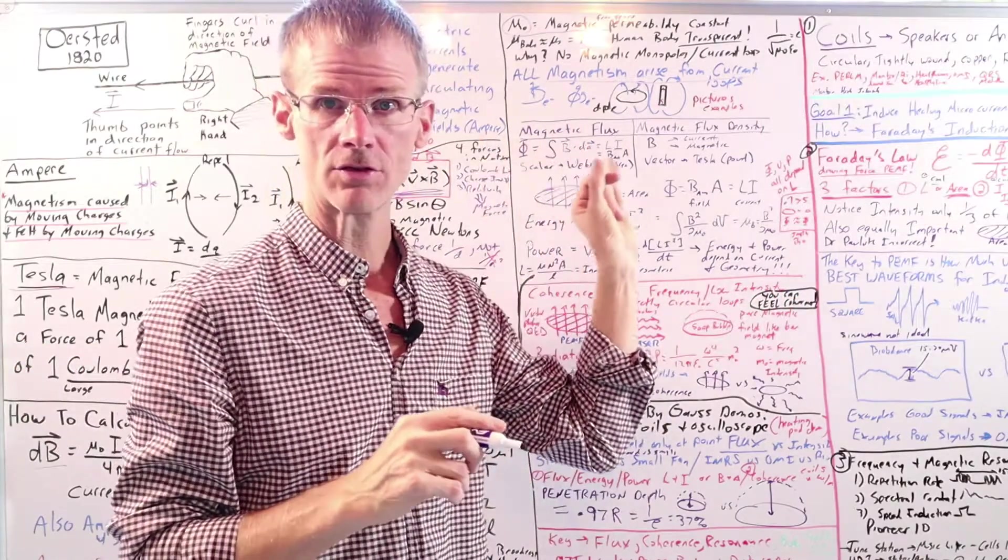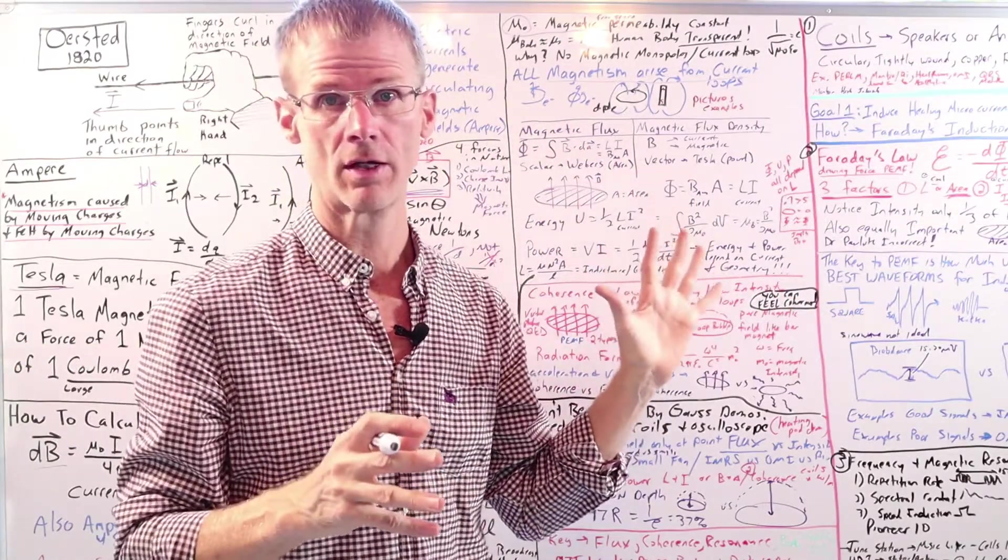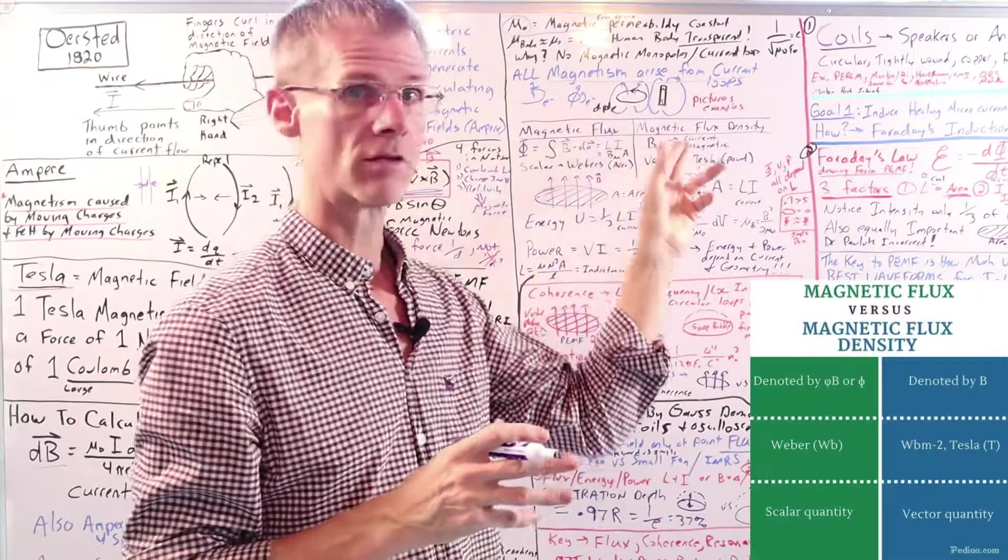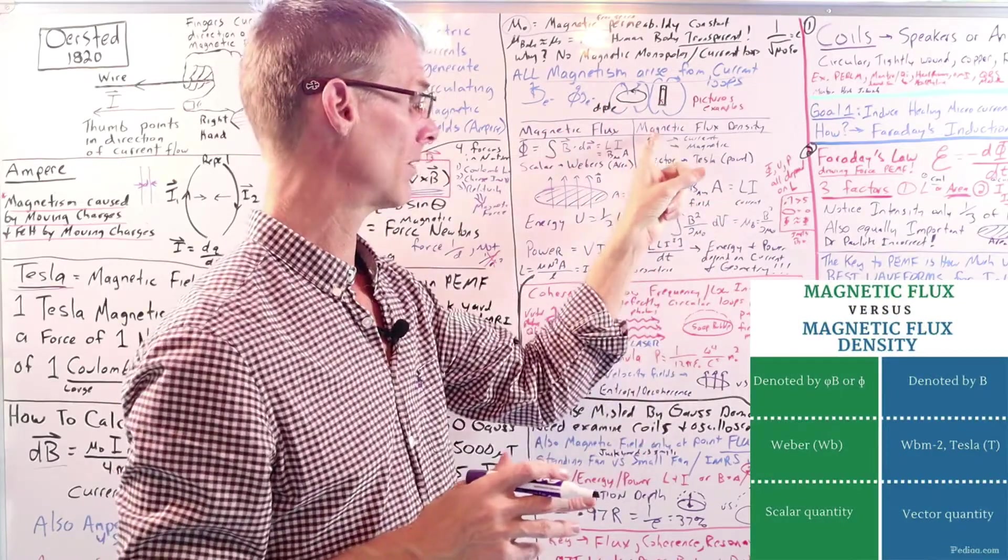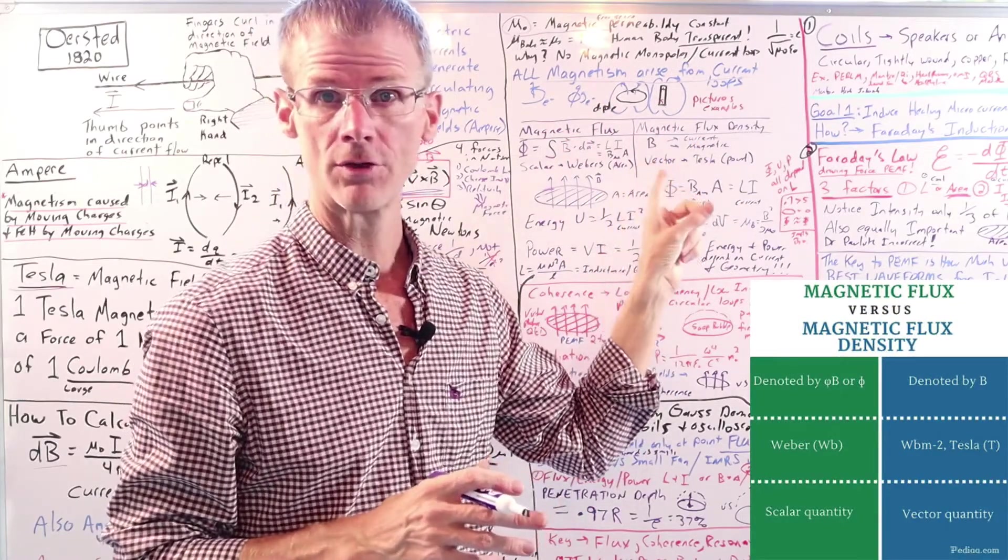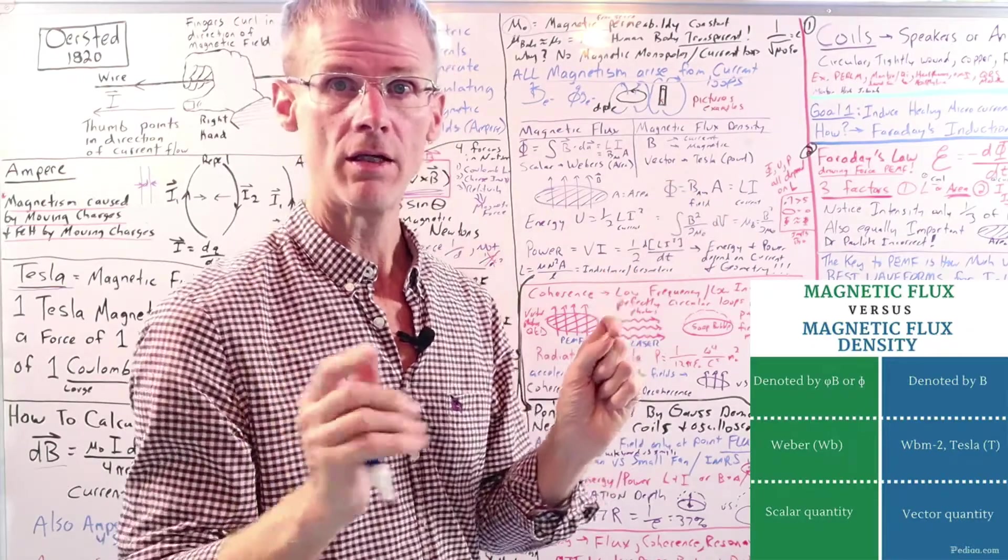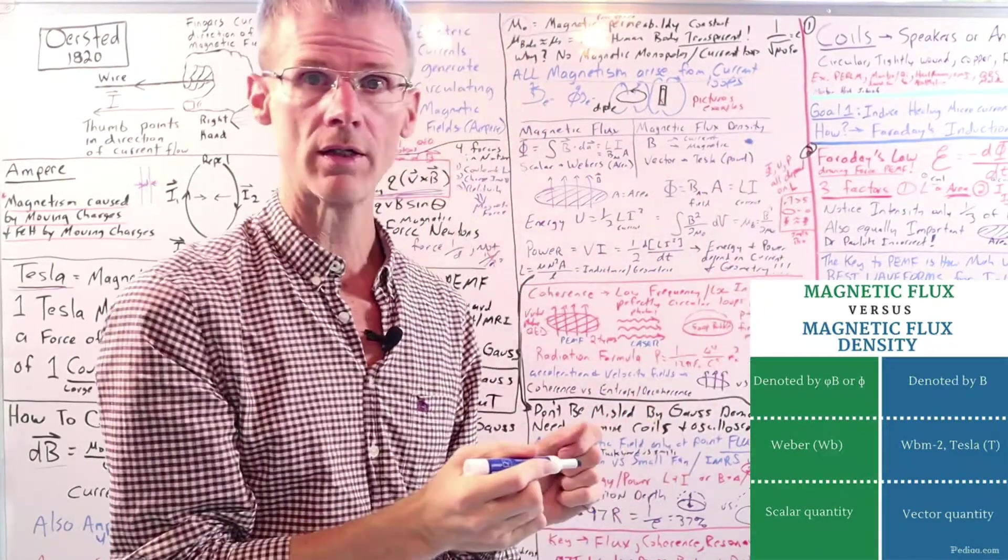So now let's talk about something that a lot of the so-called experts don't really seem to understand. And that's the difference between magnetic flux and magnetic flux density. So magnetic flux density is what we typically refer to as a magnetic field strength. But here's the thing, magnetic fields are only defined at one point.